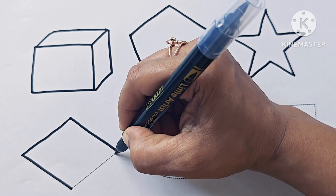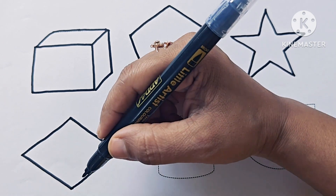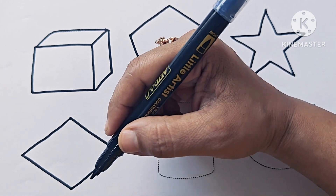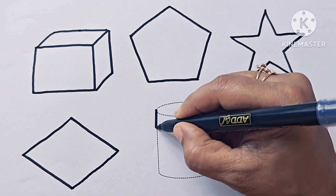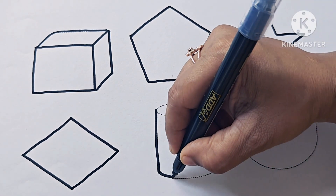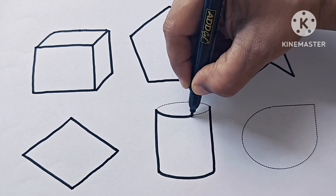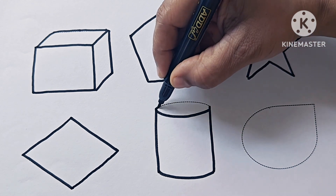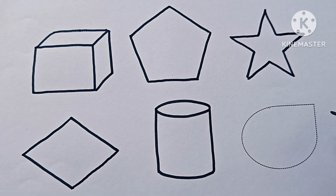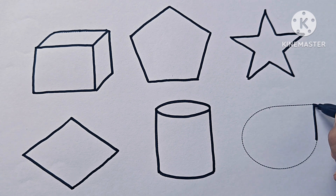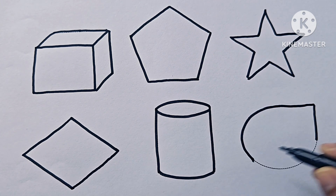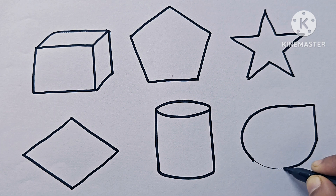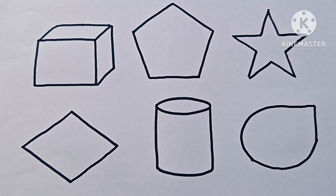The rhombus has four sides, four vertices, and four angles. It is also called a diamond. This is a cylinder — it is a 3D shape. This is a teardrop shape.